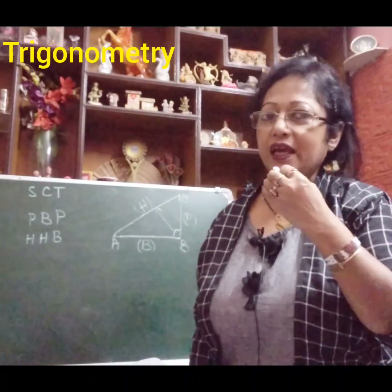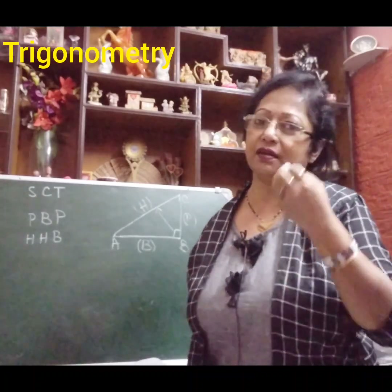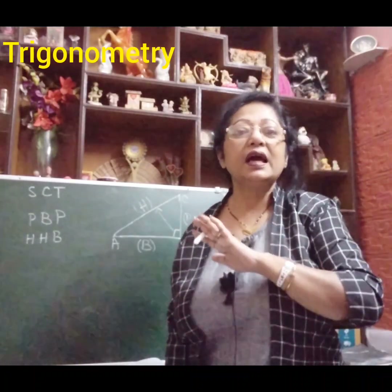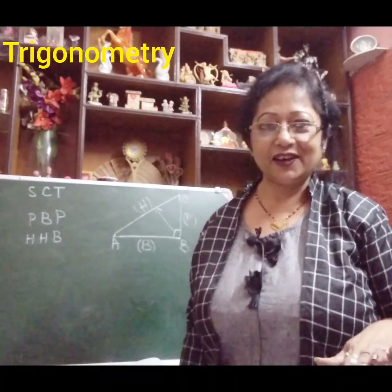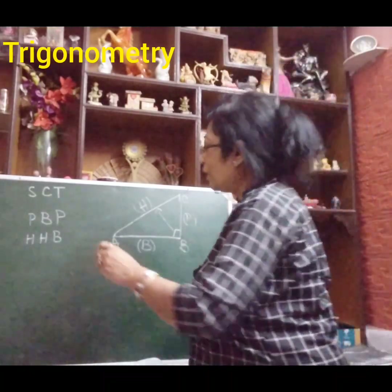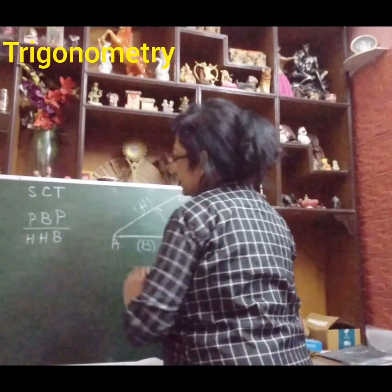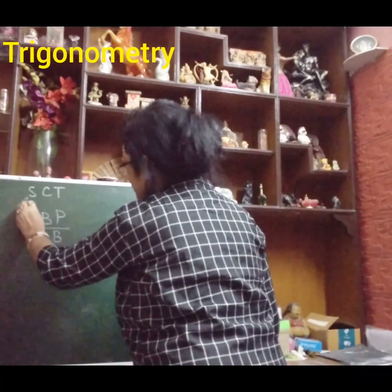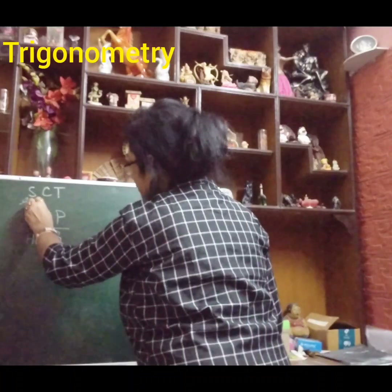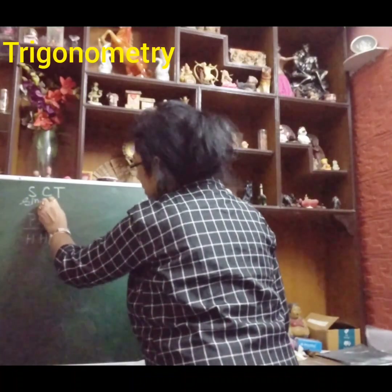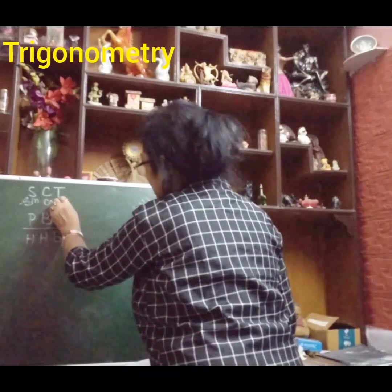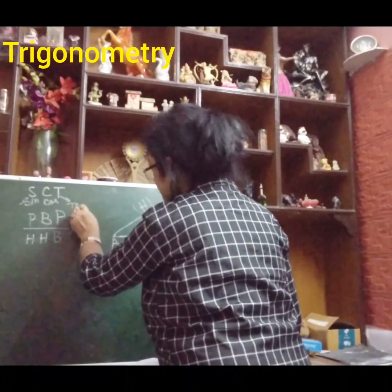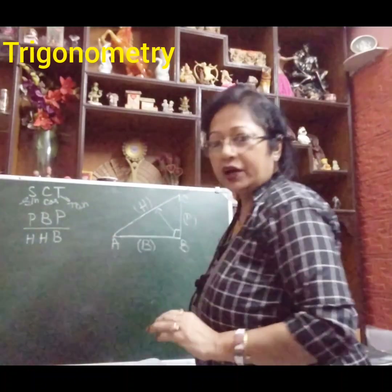Once you learn this mantra, how to find sin theta, how to find cos theta — everything will be crystal clear to you. Now I am telling you: S means sin theta, C means cos theta, and T means tan theta. Sin, cos, tan — and the opposite ones are cosec, sec, and cot.